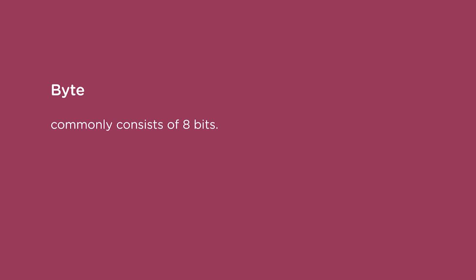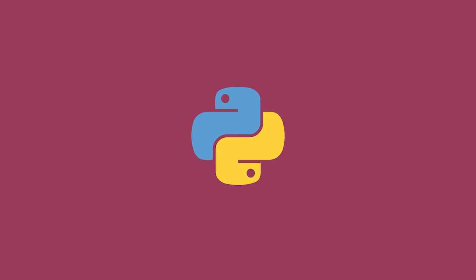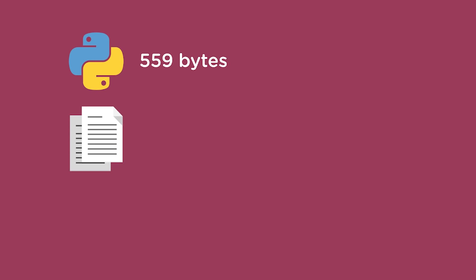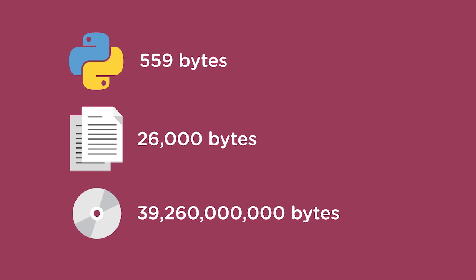We usually refer to a file size in terms of bytes. For example, this Python icon is 559 bytes. My resume, stored as a word processing file, is 26,000 bytes. The movie Hidden Figures, stored on a Blu-ray disc, is more than 39 billion bytes.